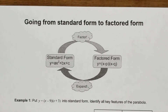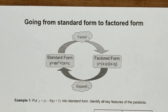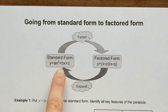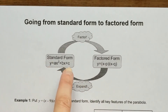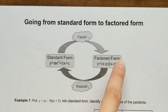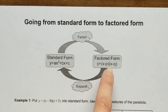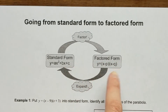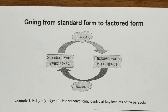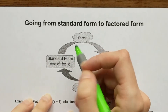Now that you're pretty skilled in factoring and expanding, we can learn how to go from standard form to factored form of a parabola. Remember that standard form looks like this: y = ax² + bx + c. Factored form was two brackets: (x - p)(x - q). In order to go from standard form to factored form, you need to factor.